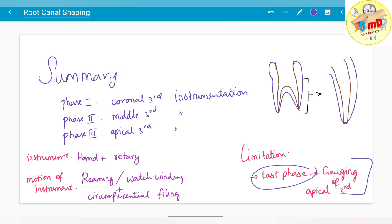To summarize: Phase 1 is coronal third instrumentation, followed by middle third in Phase 2, and Phase 3 is apical third instrumentation. Either hand or rotary instruments can be used. The motion of instrument is reaming or watch winding along with circumferential filing.